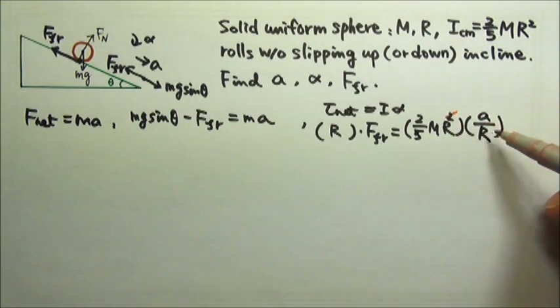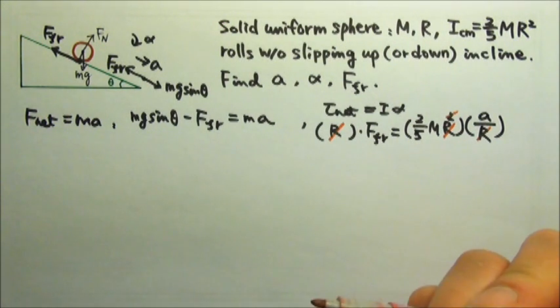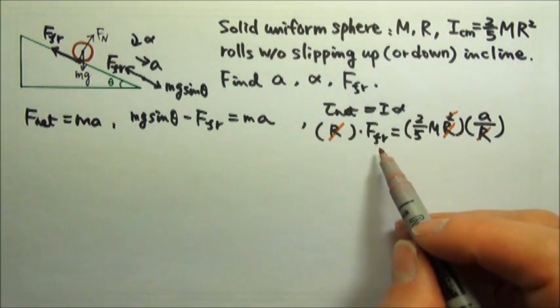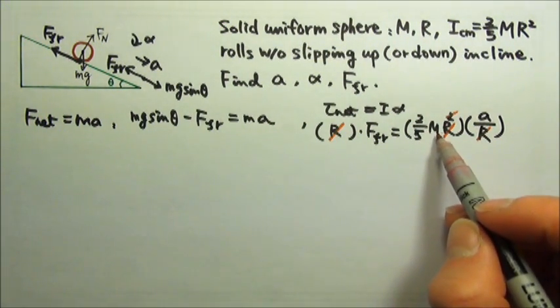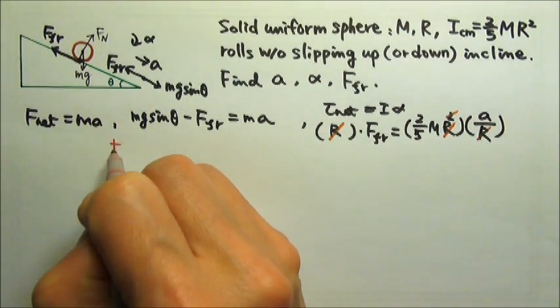In this case, the r's happen to cancel, and this r cancels with that one. So we're left with the friction equals to 2 fifths m times a, and I can put it over here and stack them and add them.